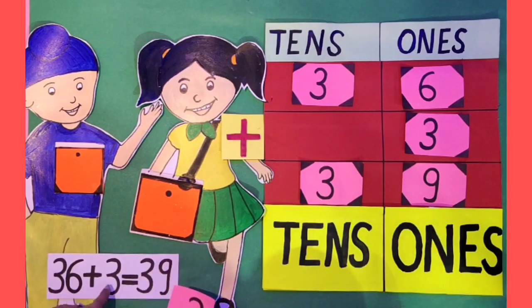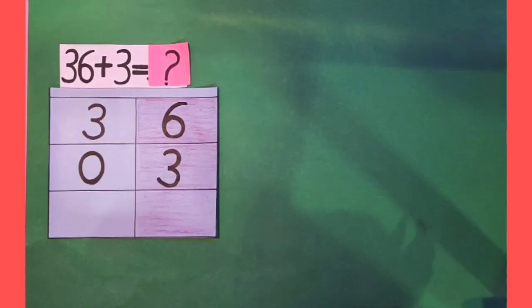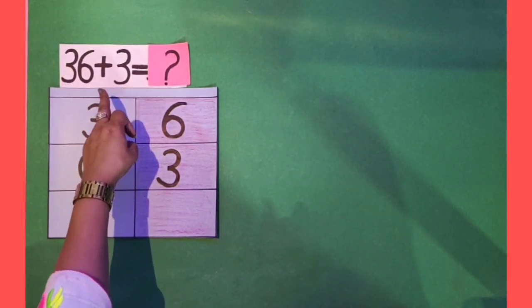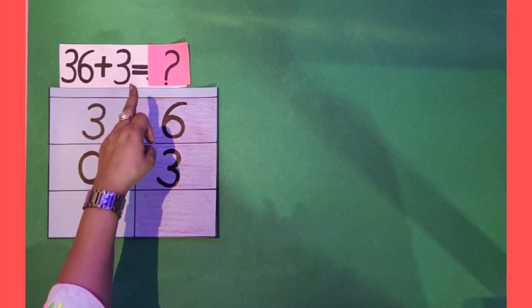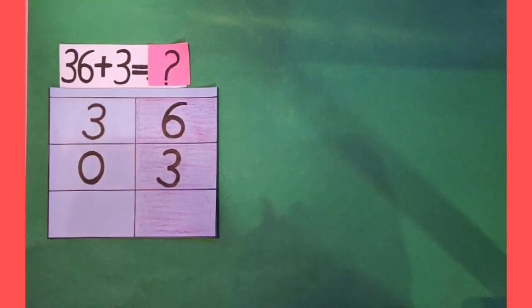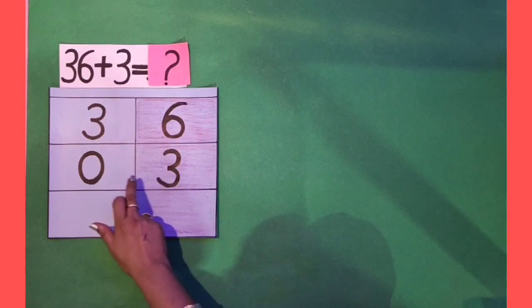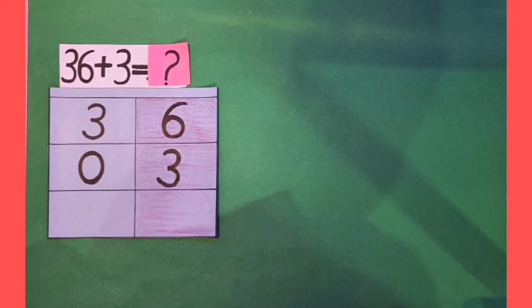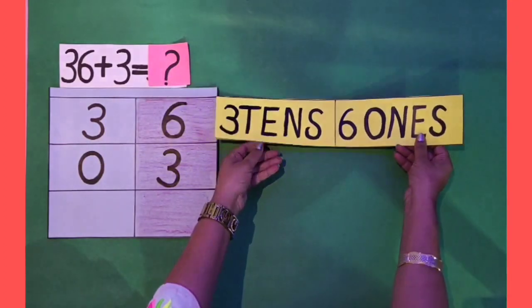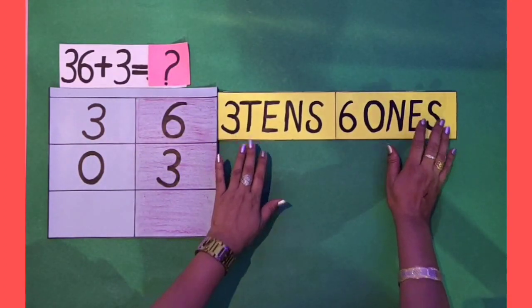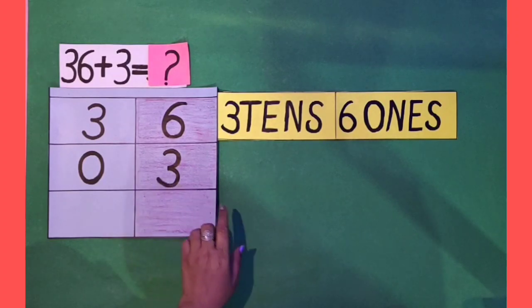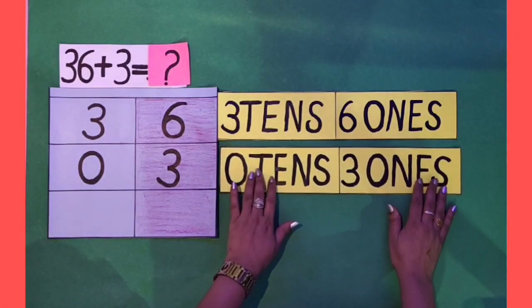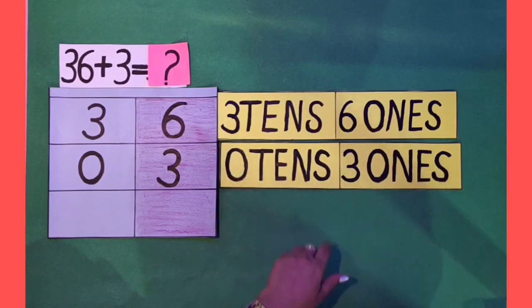So, 36 plus 3 equals 39. Kids, we have solved this sum with 2 methods. Now, we will solve this sum with a 3rd method. For that, I have written these digits in these boxes. Now, 36 means 6 ones, 3 tens. 3 means 3 ones, 0 tens.